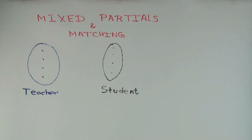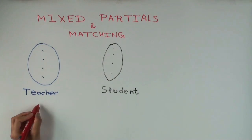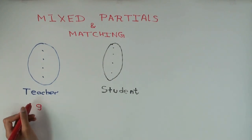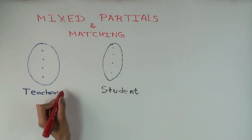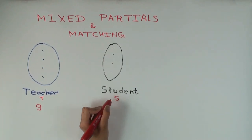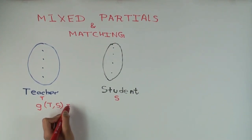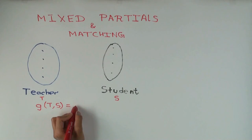Now I have to decide how to pair the teachers and students. There is an output function for each teacher and each student — call this g. Let's say there's a teacher quality, call it t, and a student quality s, and g of t comma s tells you what the output is — the student performance.